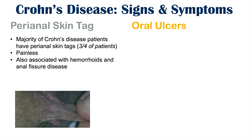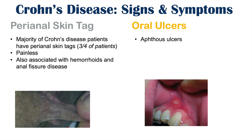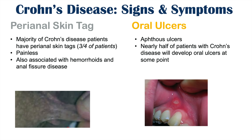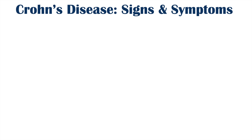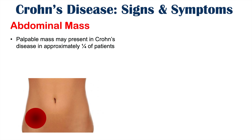Another significant clinical finding is oral ulcers, also known as aphthous ulcers — similar to canker sores. Nearly half of patients with Crohn's disease will develop these oral ulcers at some point in their life. Additionally, patients may experience a feeling or sensation of an abdominal mass. This palpable mass is present in roughly a quarter of Crohn's disease patients and is most commonly located in the right lower quadrant, due to inflammatory changes in that area.